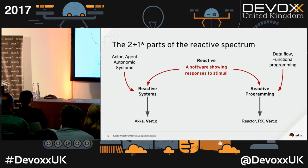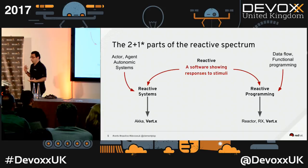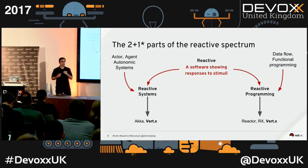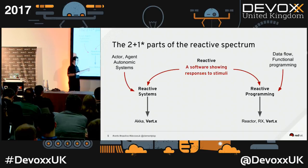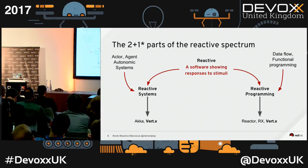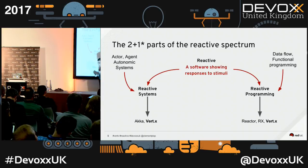On the other side, I have reactive programming — that one is about programming, not architecture. Reactive programming is an API that lets you write code around data flow, very close to functional programming. In the Java world we have Akka, a pure actor model, and Vert.x on the systems side, and on the programming side, Reactor from Pivotal, reactive extensions (initially from Microsoft, now with bindings in all languages), and Vert.x too — Vert.x is on both sides.